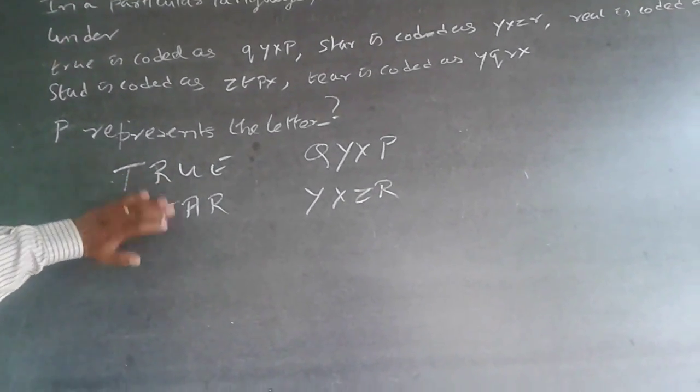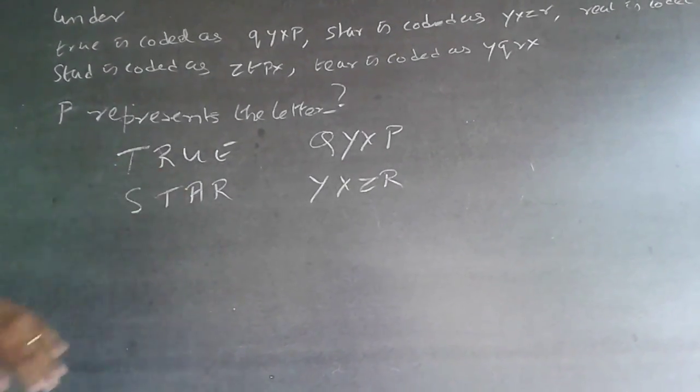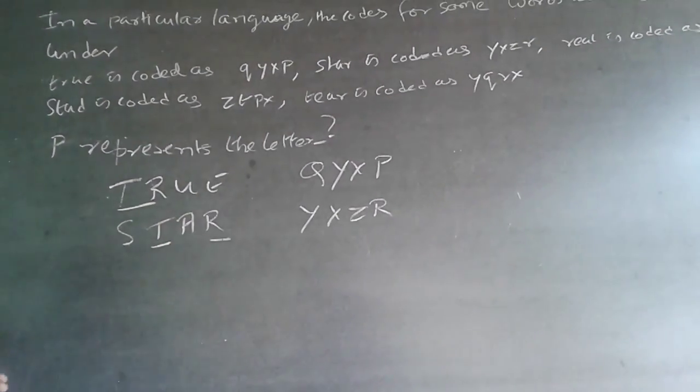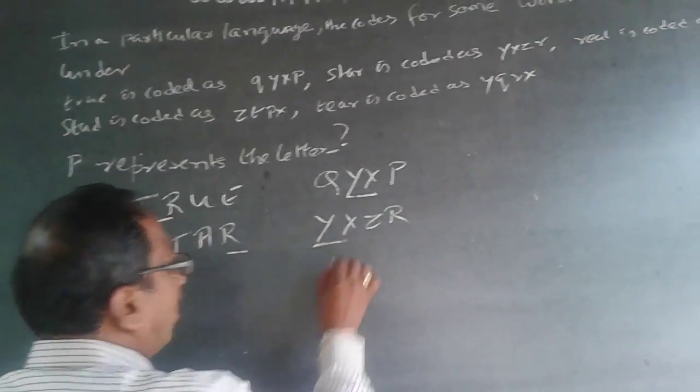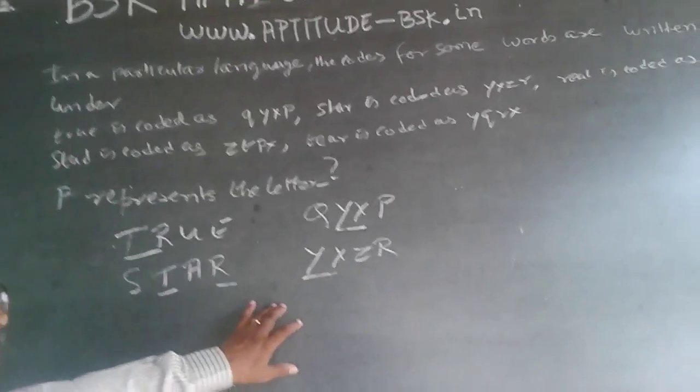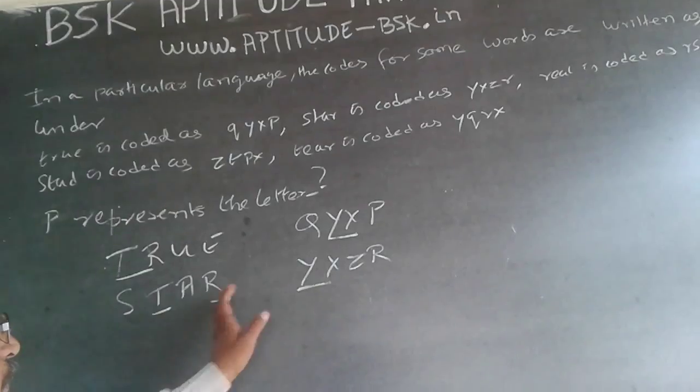Here TRUE and STAR, two letters are common: T and R are common. Similarly here YX and YX are common, so T is Y, R will be X.